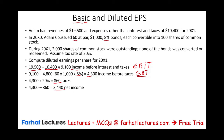Now we have net income. Let's compute basic earnings per share — it's net income divided by shares outstanding. The basic earnings per share is $1.72.